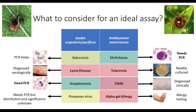Going back to the different diseases caused by these different ticks, Lyme disease is going to be diagnosed serologically, so we're not worried about that in a molecular assay. Tularemia is readily cultured. STARI is diagnosed clinically. Alpha-gal allergy is diagnosed through allergy testing. Powassan virus does need PCR for detection, but distribution and overall significance is unknown. Babesiosis — PCR helps, but most cases of Babesia will be visible in the CBC since it's an intracellular parasite of erythrocytes. However, ehrlichiosis you're not going to catch on the CBC, so you need PCR. The same goes for anaplasmosis.